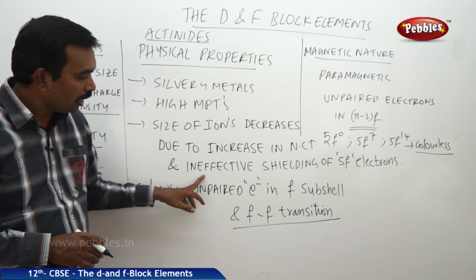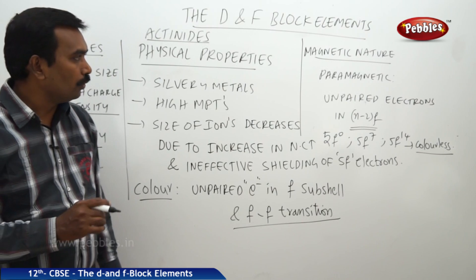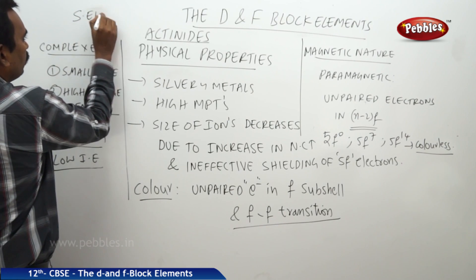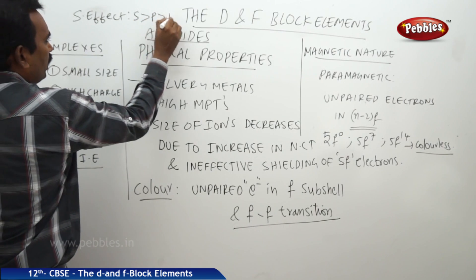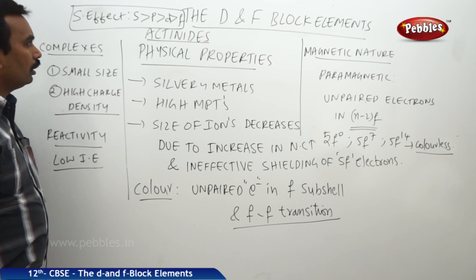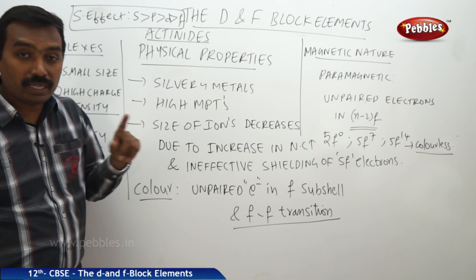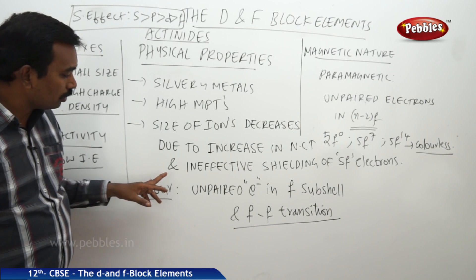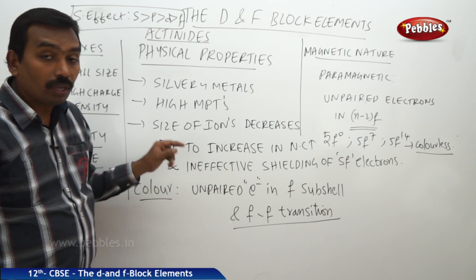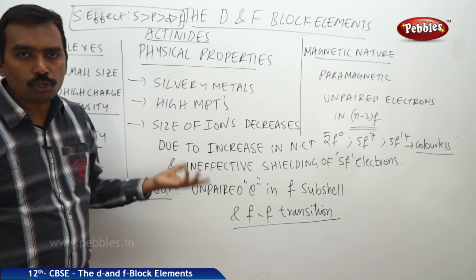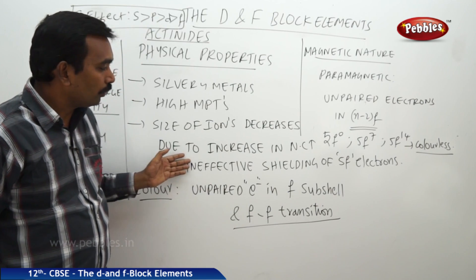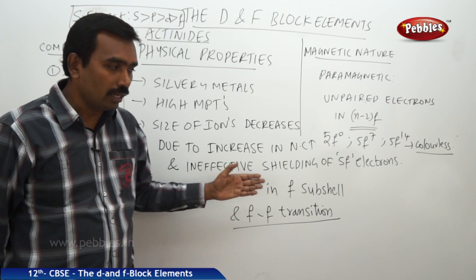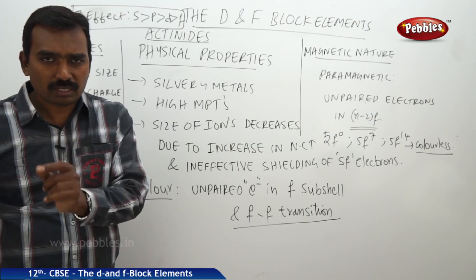This size decrease is due to ineffective shielding by f subshell electrons. The shielding effect order is s > p > d > f, meaning the f subshell offers the lowest shielding. Since the last electron enters the 5f subshell offering no effective shielding, the effective nuclear charge increases from left to right, causing atomic and ionic radii to decrease — only up to 16 picometers as discussed.